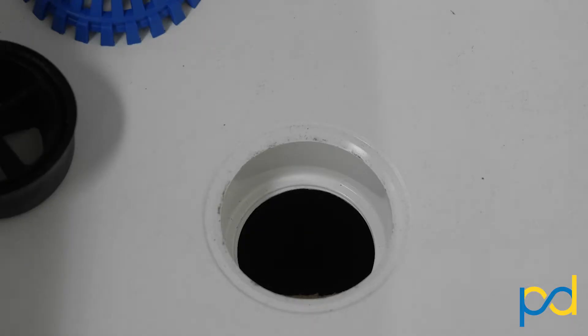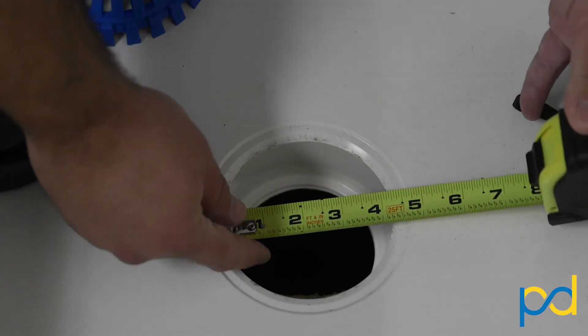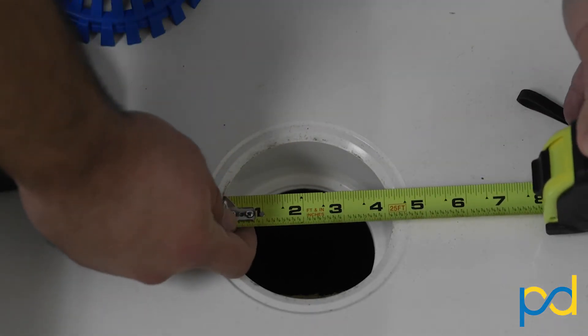First thing we're going to do is measure the size of the drain opening in our mop sink. Here you can see we have a 4 inch drain opening.